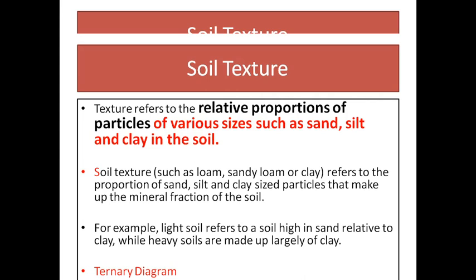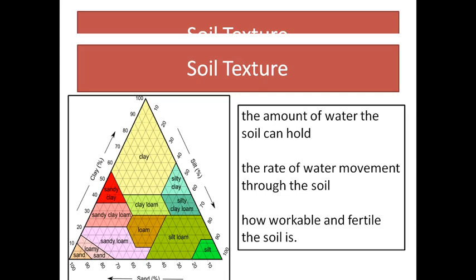Now the second topic is soil texture. Soil texture is the relative proportion of soil particles of various sizes such as sand, silt, and clay. Soil texture is normally described through the ternary diagram, where the proportions of sand, silt, and clay are described using percentage values, each ranging from 0 to 100 percent. Soil texture is a very important attribute of soil.